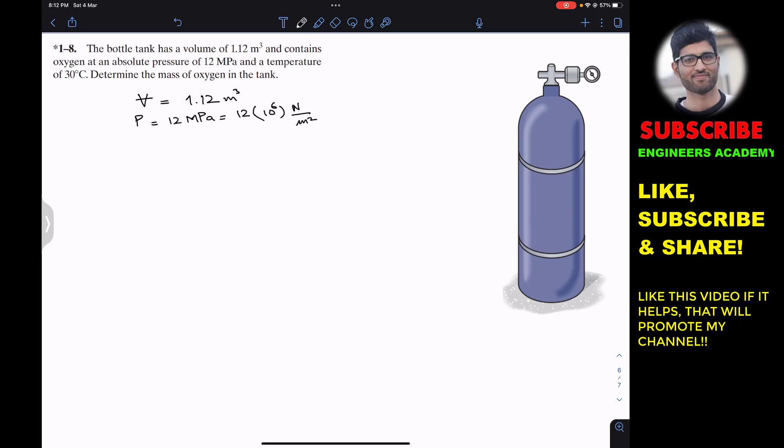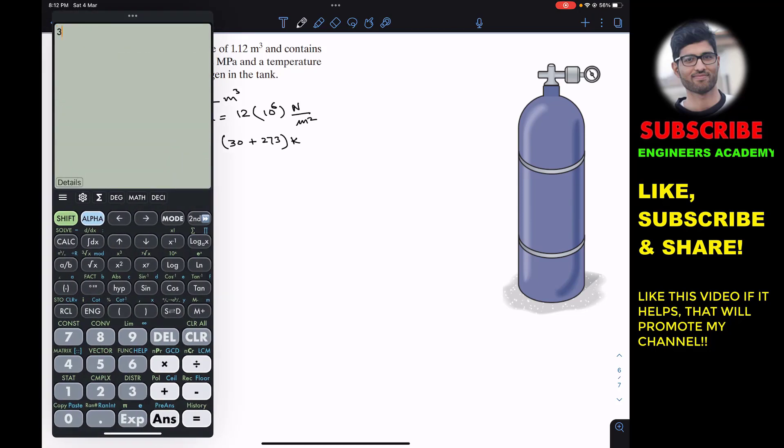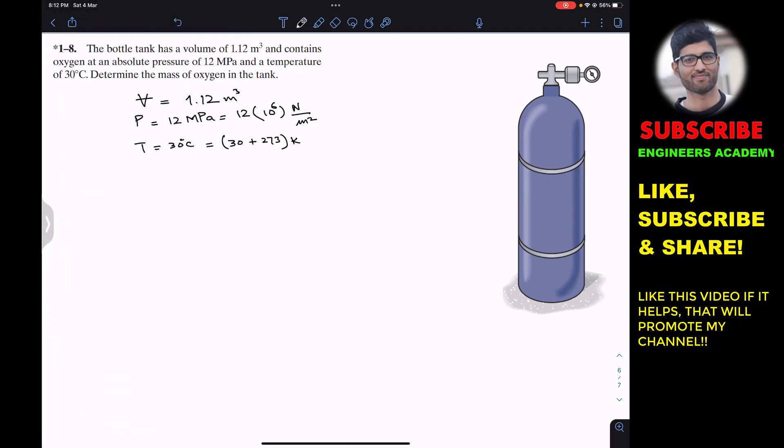We are given the temperature that is 30 degrees Celsius. If you want to convert it into Kelvin, we need to add 273. So 30 plus 273 gives us 303 Kelvin.